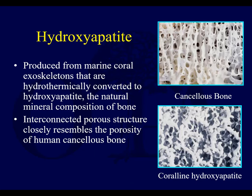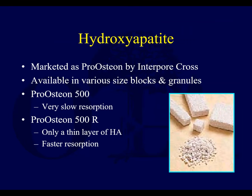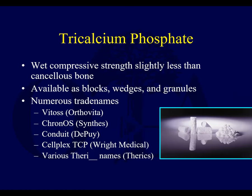Hydroxyapatite is produced from marine coral exoskeletons and has a porous structure that looks a lot like cancellous bone. These are commercially available and generally have a relatively low rate of resorption — they take a long time to resorb. Tricalcium phosphates are pretty common, have very good working properties, good compressive strength, and are available in injectable forms as well as pre-shaped forms.